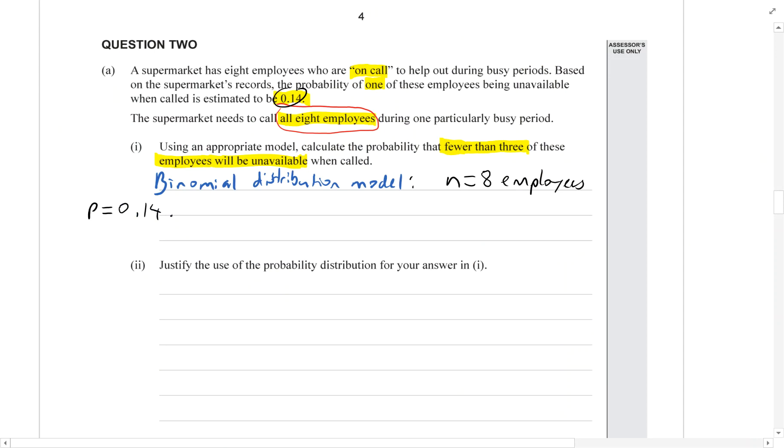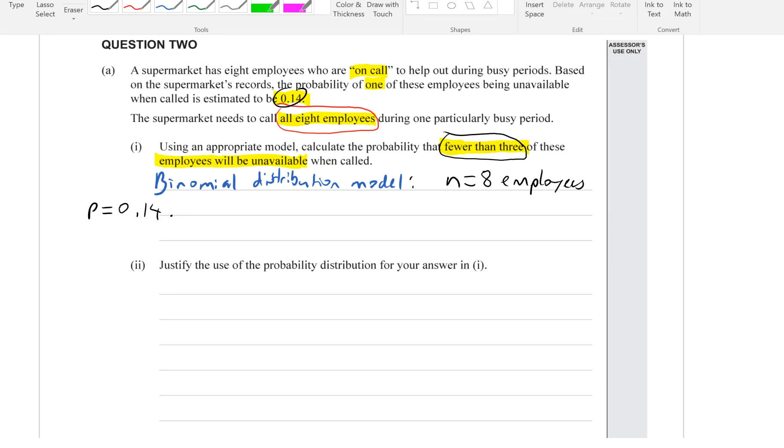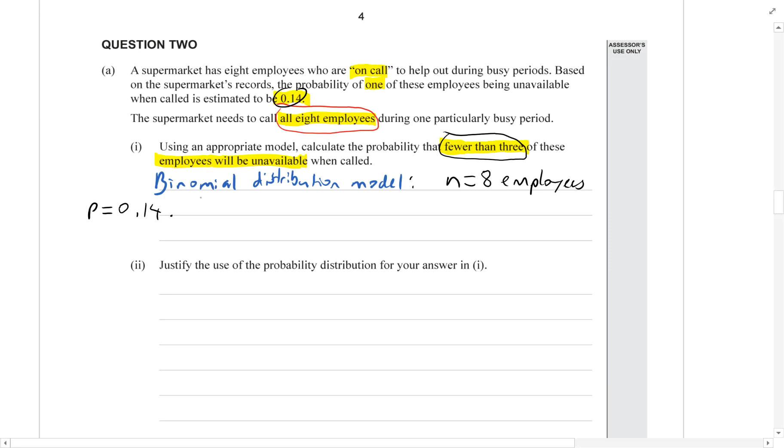From there, we need to work out the probability that fewer than three are unavailable. So the next thing we need to do is our number line. I'm going to number the possible number of employees who could be unavailable. That's going to be 0, right through to 8.